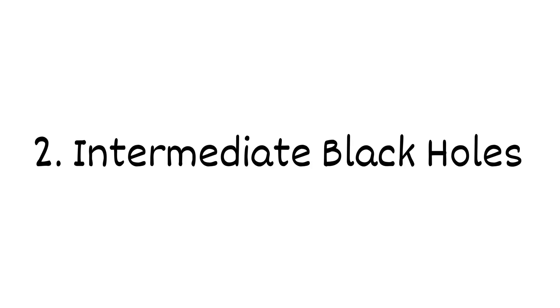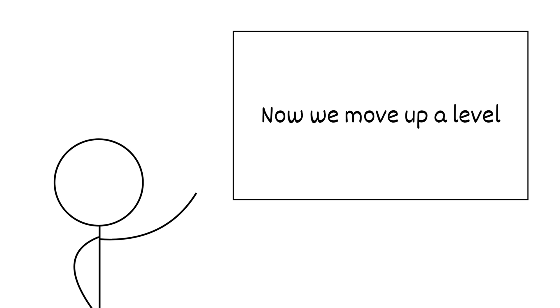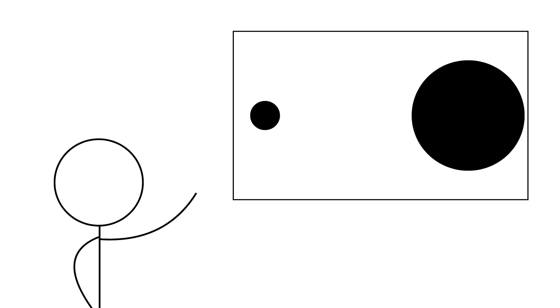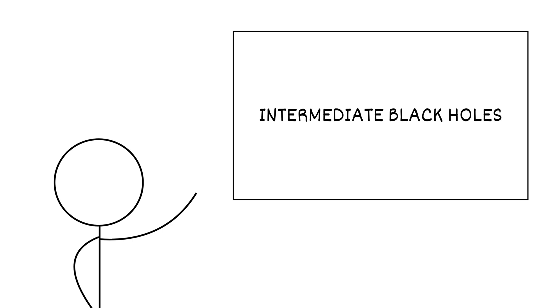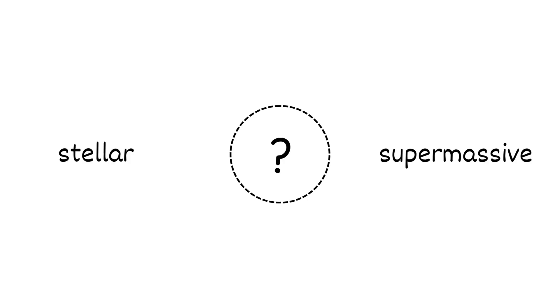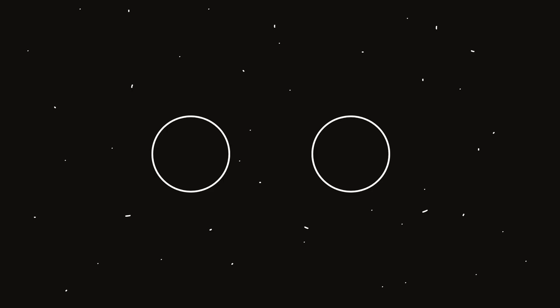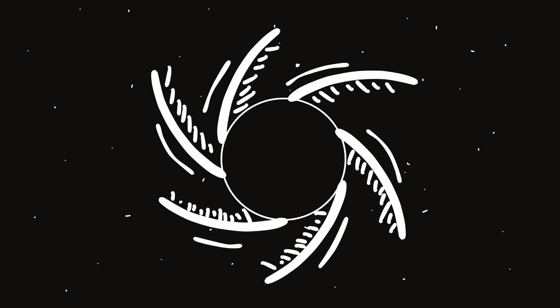Intermediate black holes. Now we move up a level. Not too small, not too massive, just in between. These are called intermediate black holes. Think of them as the missing link between stellar and supermassive black holes. Scientists believe they form when smaller black holes merge or when giant stars collapse in dense clusters, but we've barely found any.